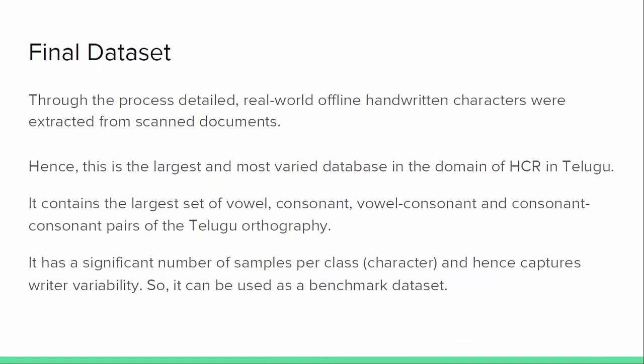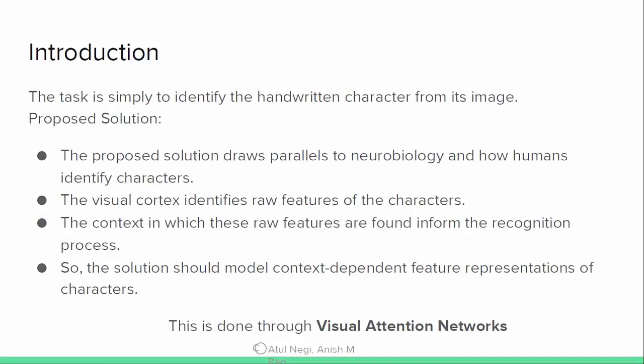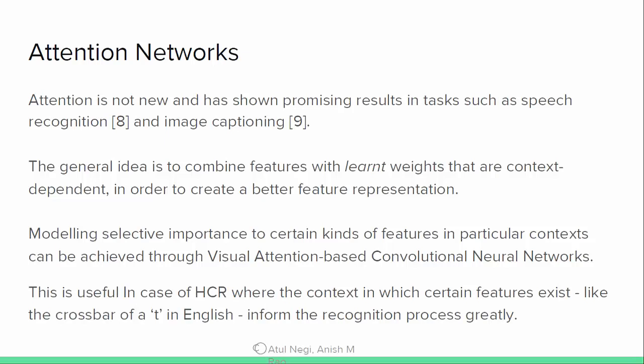The second part of the work is proposing a network for recognition. It is inspired by parallels to neurobiology. These models are of course simplifications — biology may be much more complex — but they are inspired by it. For those who would like to know more about attention networks, other references are available, and attention has previously been used for speech recognition, image captioning, and similar tasks. The idea is to combine features with learnt context-dependent representations for better feature representation for recognition.